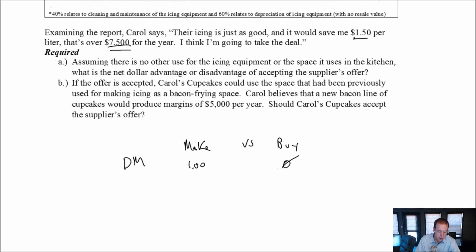Direct labor, $0.50 is what direct labor costs me. If I make, and if I buy, I don't have to pay anybody to make icing, right? They're not spending whatever it takes, a half an hour to make a batch of icing. That's not happening any longer.